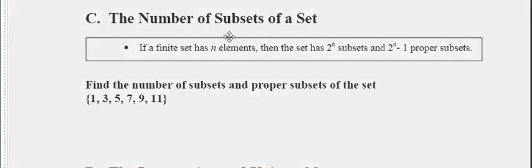If a finite set has n elements, then the set has 2 to the n subsets and 2 to the n minus 1 proper subsets. A proper subset cannot include the original set itself, so that's why it subtracts 1 from the list of sets in 2 to the n.